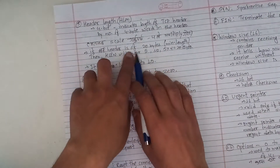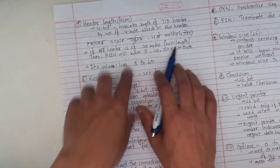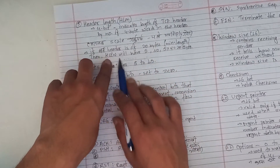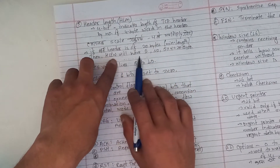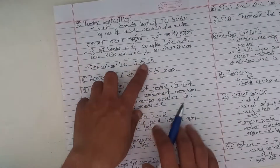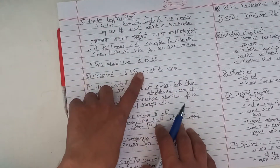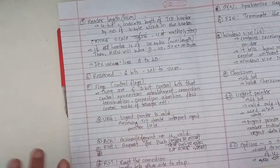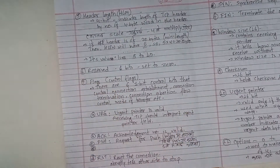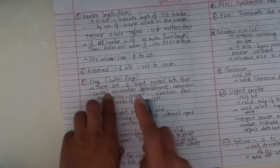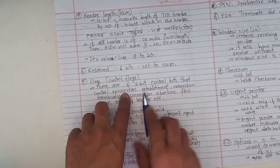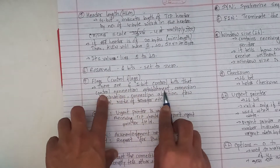If the header is 20 bytes, the minimum length is 20 bytes, and the header length field value would be 5. The reserved field is 6 bits set to 0. Then there are the control flags, which are very very important.